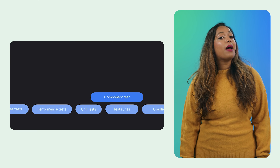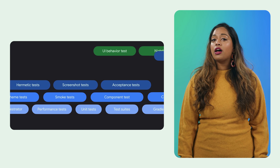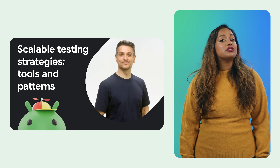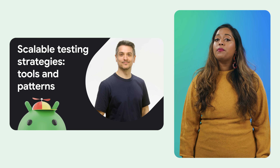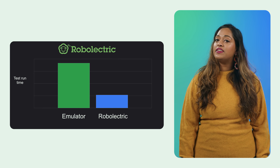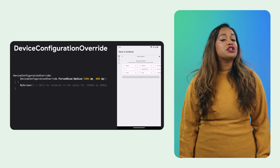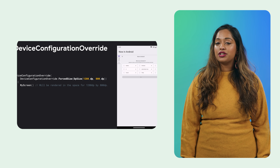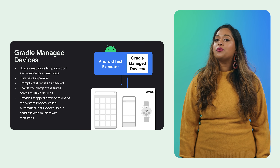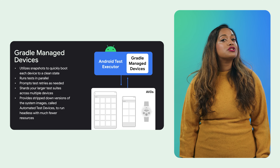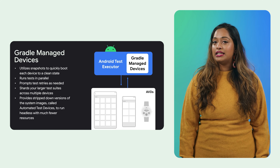With apps running on so many different screens and form factors, scalable and automated testing is more critical than ever. Check out the Tools and Patterns for Scalable Android App Testing video for helpful patterns and tools around automated testing. You can use Robolectric to speed up Compose and Espresso tests by running them on the JVM. You can use Device Configuration Override to emulate different window sizes without needing physical devices for every form factor. And to manage test execution and reliability, you can use Gradle Managed Devices, which lets you define emulators, run tests in parallel, and even use snapshots for clean device states.